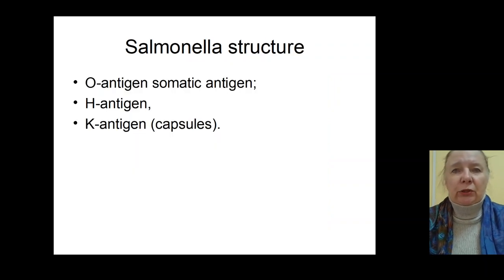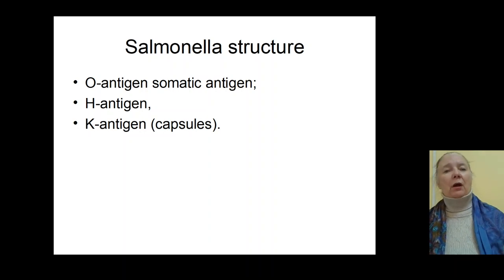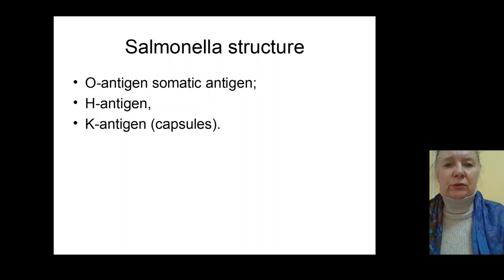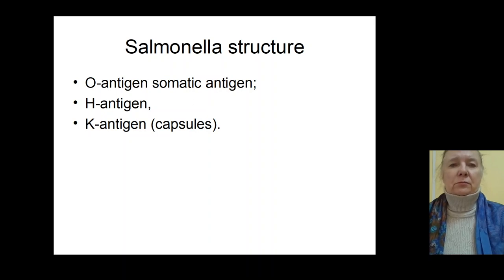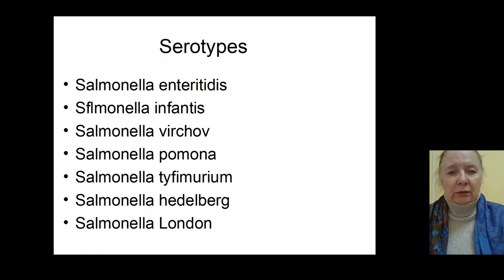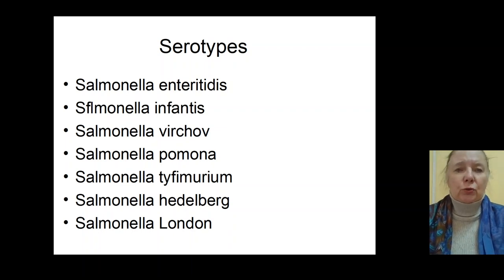Let's speak about the etiology of Salmonellosis. You can see the structure of those bacteria: O antigen, which is the somatic antigen; H antigen; and K antigen, which is the capsular antigen. There are some serovars of Salmonella: Salmonella enteritidis, Salmonella infantis, Salmonella virchow, Salmonella pomona, Salmonella typhimurium, Salmonella heidelberg, and Salmonella london. These are certain types of Salmonella which cause infection in people.